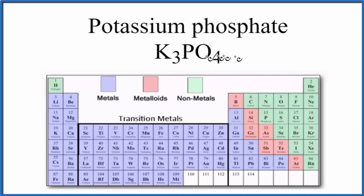The short answer is that overall, this potassium phosphate compound is ionic, but when we look at the phosphate ion, the bonds between the phosphorus and the oxygen atoms, those are covalent bonds.